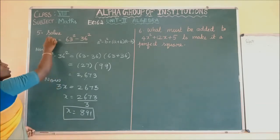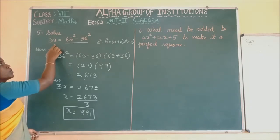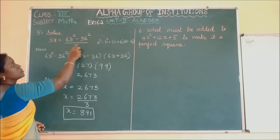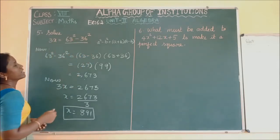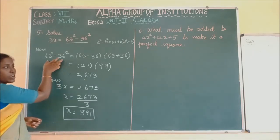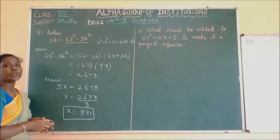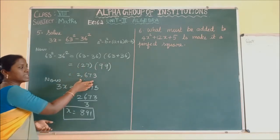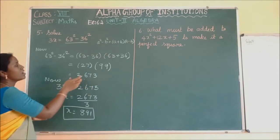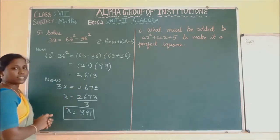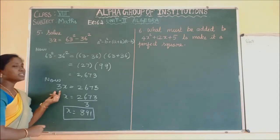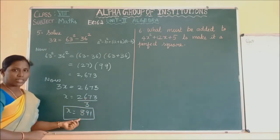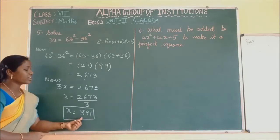So 'solve' means we have to find the unknown value in the given expression. Here the unknown was X. To find X, we solved the right-hand side using the identity A plus B into A minus B, getting 2673. Then 3X equals 2673, and dividing by 3 gives us X equals 891.